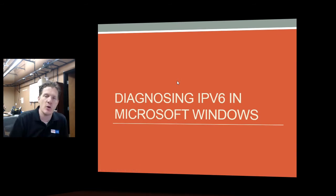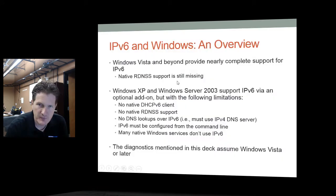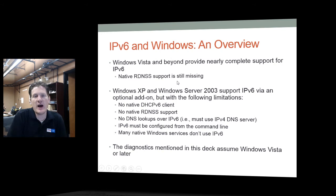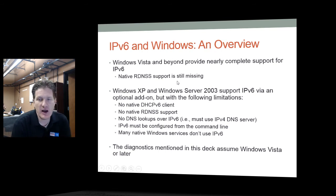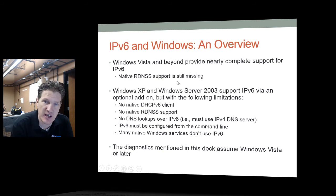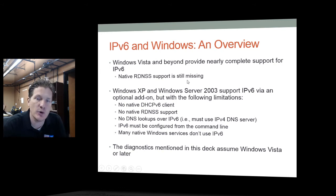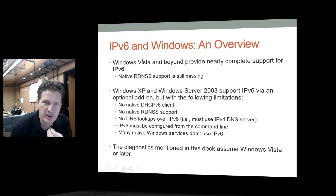Finally, let's go over command-line tools in Microsoft Windows for testing IPv6. Windows Vista and later all support IPv6 natively. Windows XP and Server 2003 support IPv6 but you have to add it manually, and when you do, you don't get DHCPv6 or DNS lookups — it must be configured via the command line, and many services in XP and 2003 will not recognize IPv6. Everything discussed here assumes Windows Vista or later.